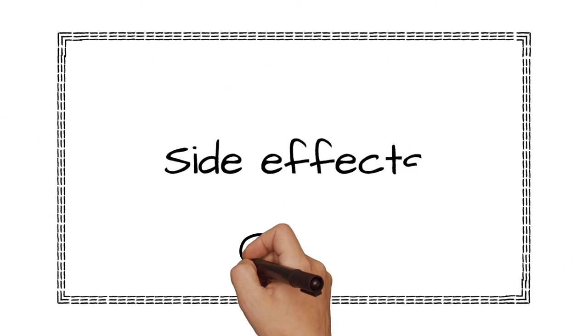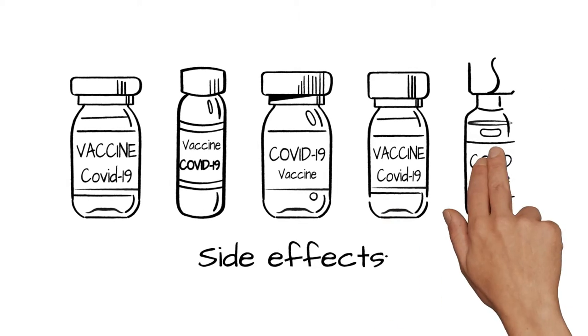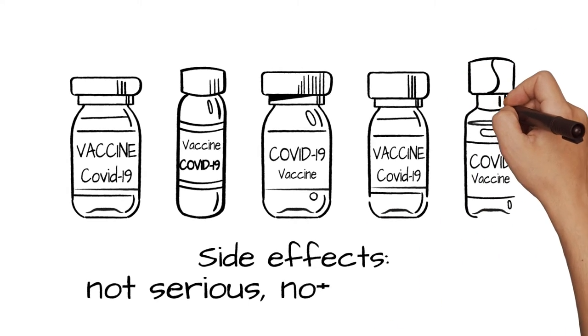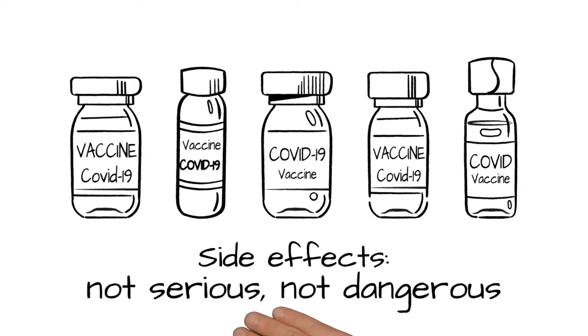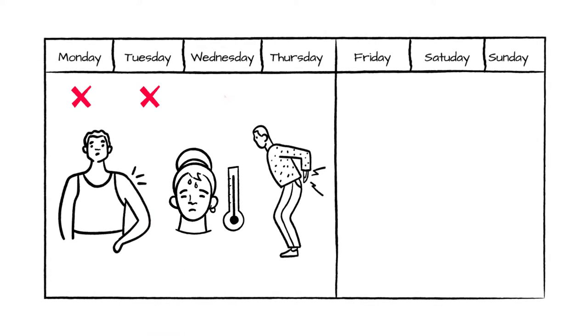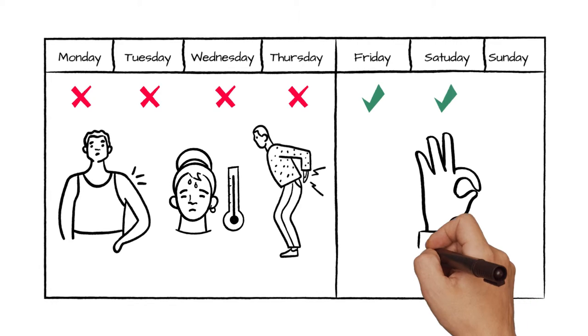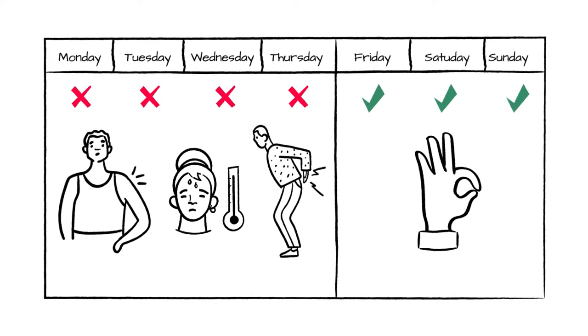Side Effects. COVID-19 vaccines can have side effects, but the vast majority are very short-term, not serious or dangerous. After the shots, you might have a sore arm, a mild fever or body aches, but this doesn't mean you have COVID-19. This discomfort generally passes in a few days.